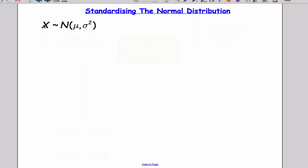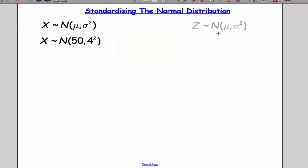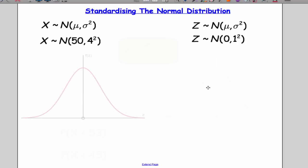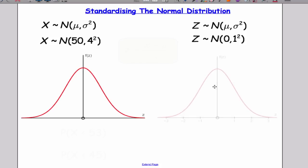Suppose I have a continuous random variable that I know is normally distributed and has some mean mu and a variance sigma squared. In this case the mean is 50 and the variance is 4 squared, or in other words the standard deviation is 4. In the previous video we learnt how to work out various probabilities from our tables, but that was only for the standard normal distribution Z, when the mean was 0 and the standard deviation was 1. So we have a bit of a problem — our tables only work when our normal distribution is standard.